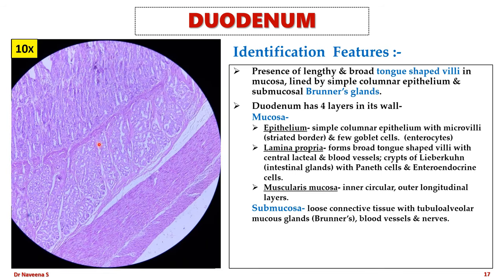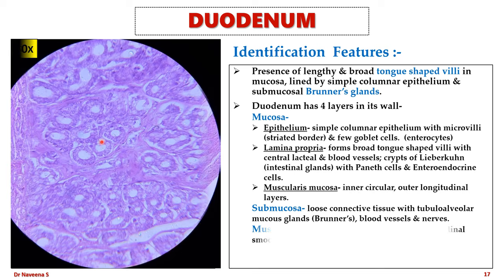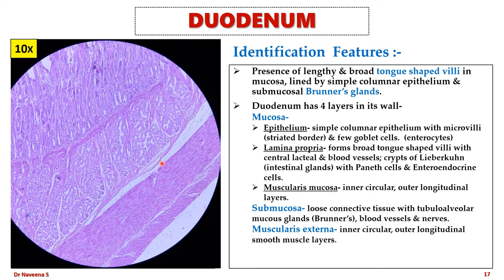Coming to the submucosa, which is formed by loose connective tissue with blood vessels and nerves, it is composed of numerous tubuloalveolar mucous glands — Brunner's glands — which are tightly packed and secrete mucus. Muscularis externa is composed of inner circular and outer longitudinal smooth muscle layers. The outermost layer is serosa formed by the peritoneal layer lined by simple squamous epithelium.